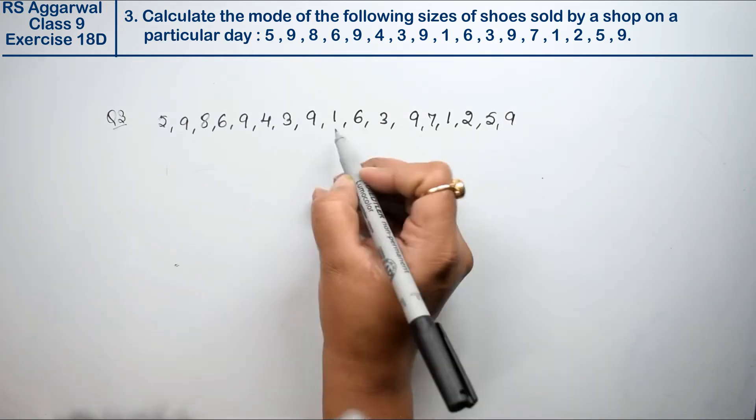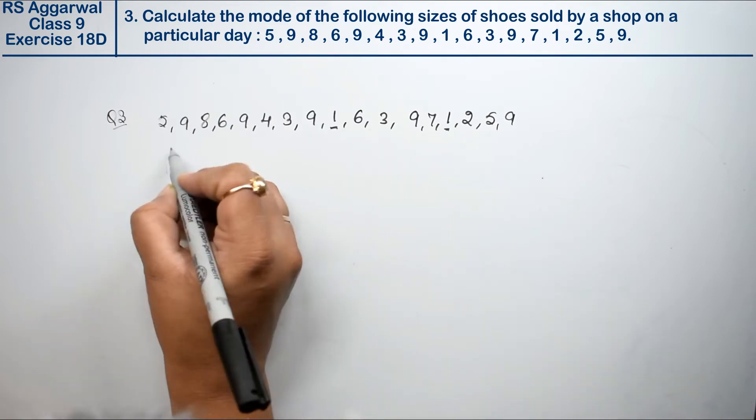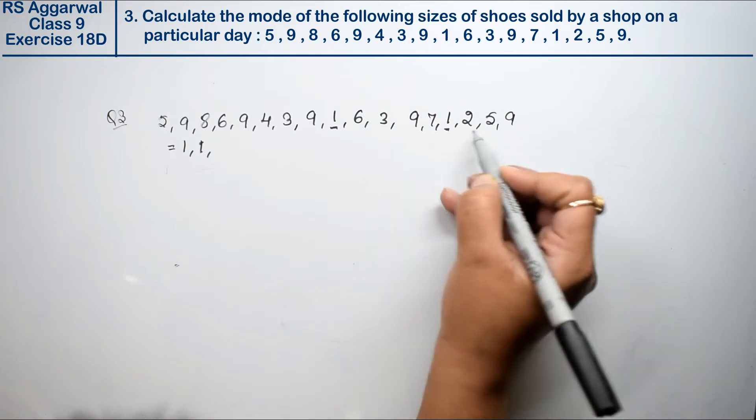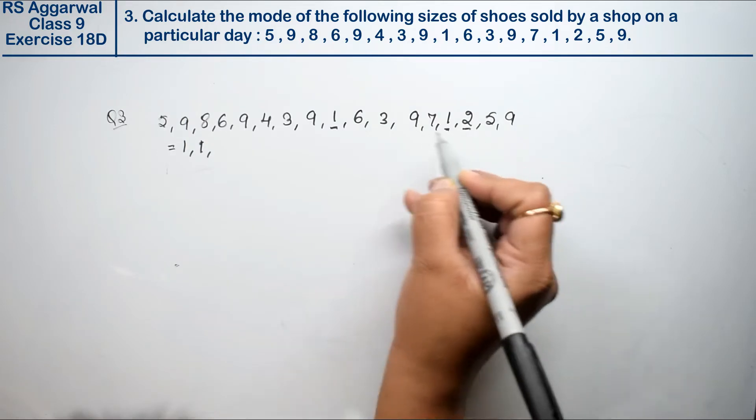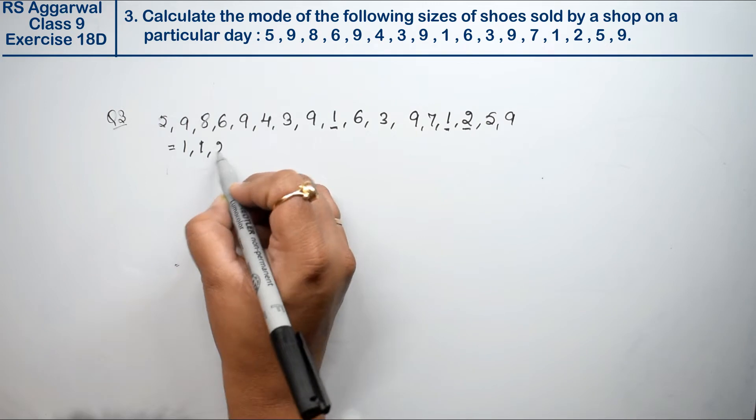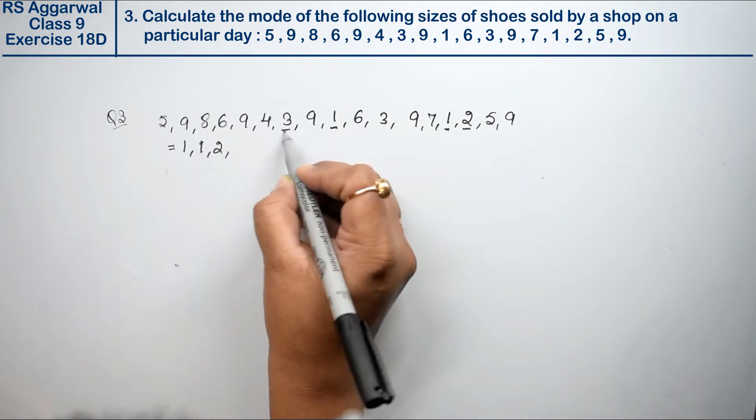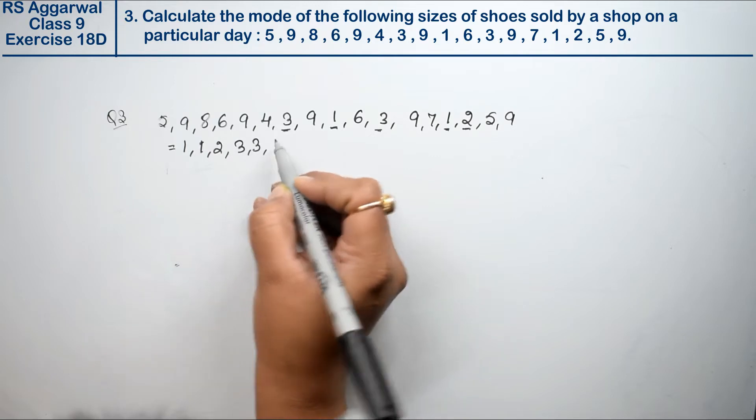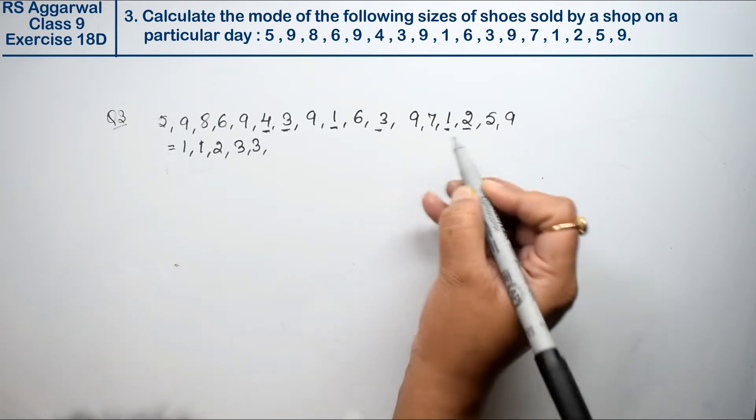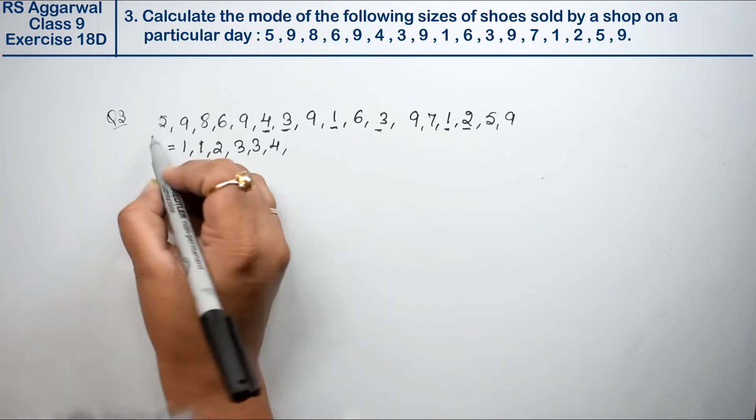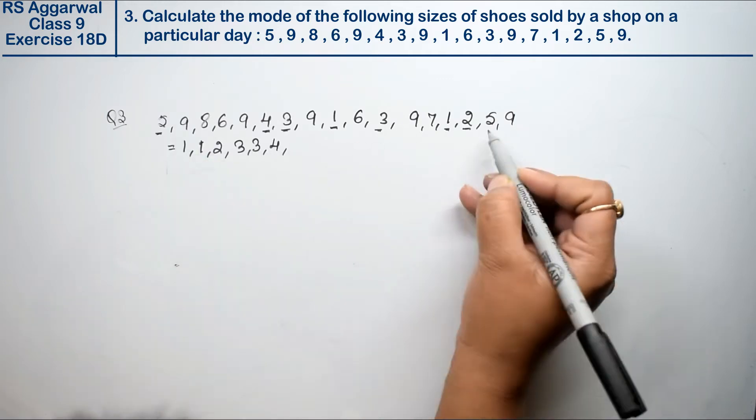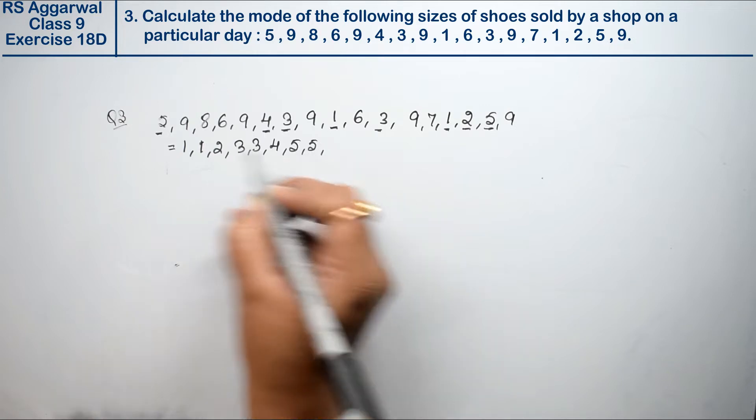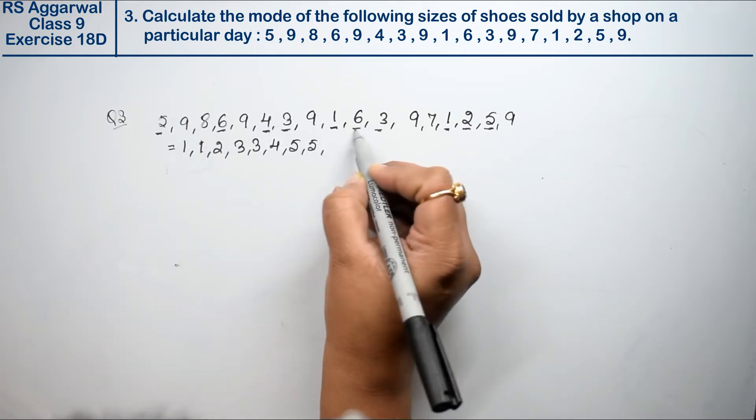Let's organize in ascending order. 1 appears 2 times. 2 appears 1 time. 3 appears 2 times. 4 appears 1 time. 5 appears 2 times. 6 appears 2 times.